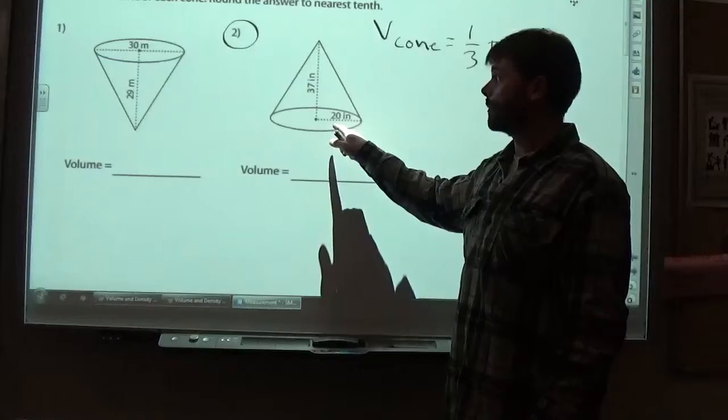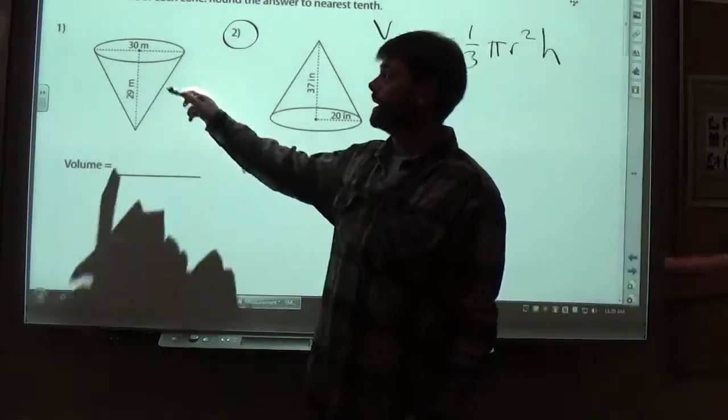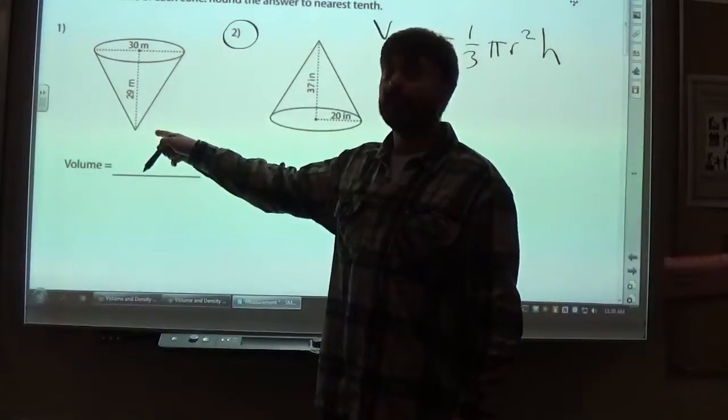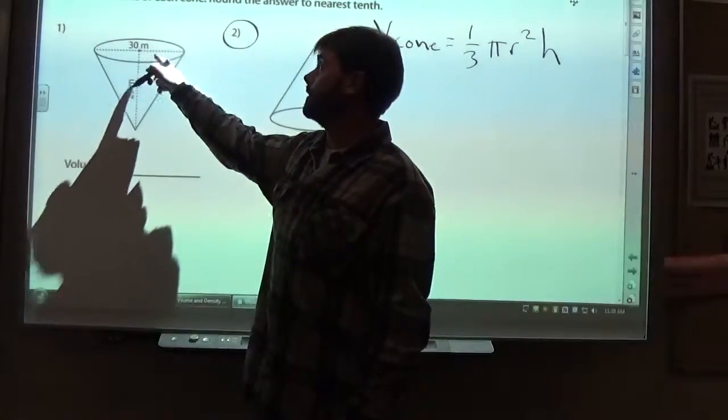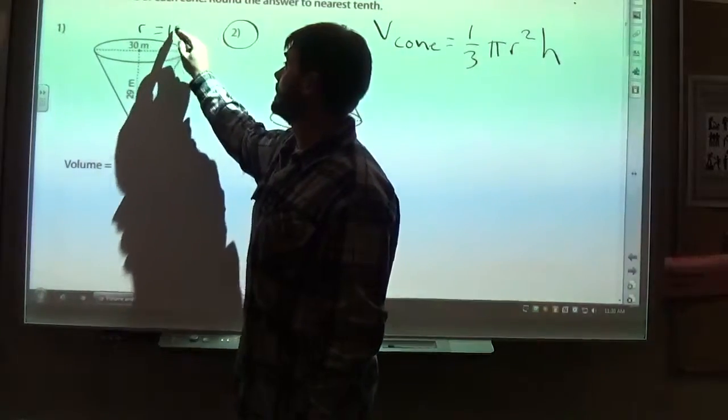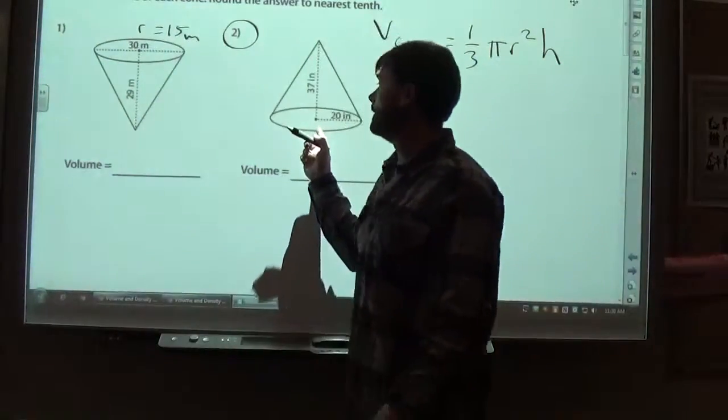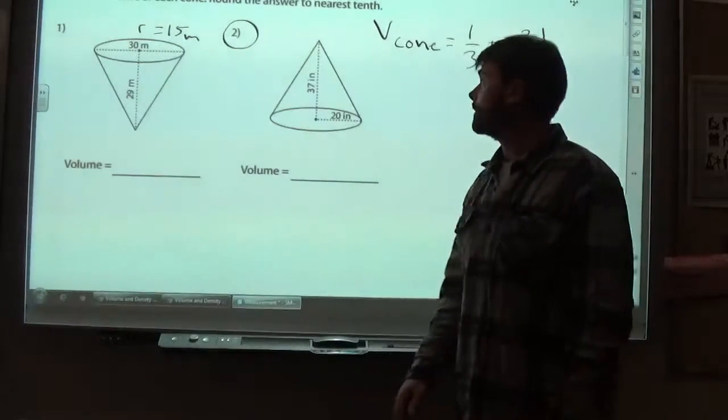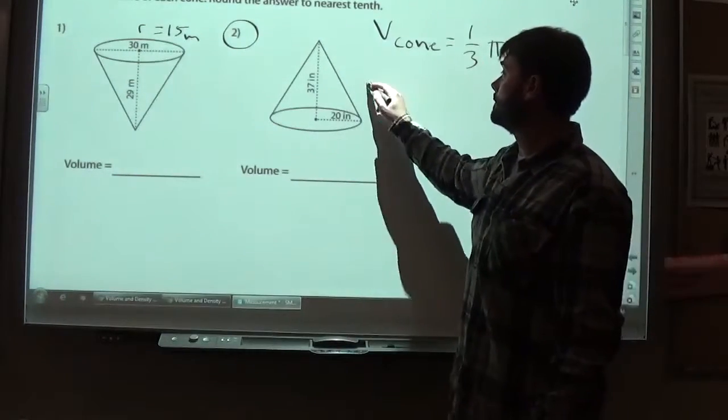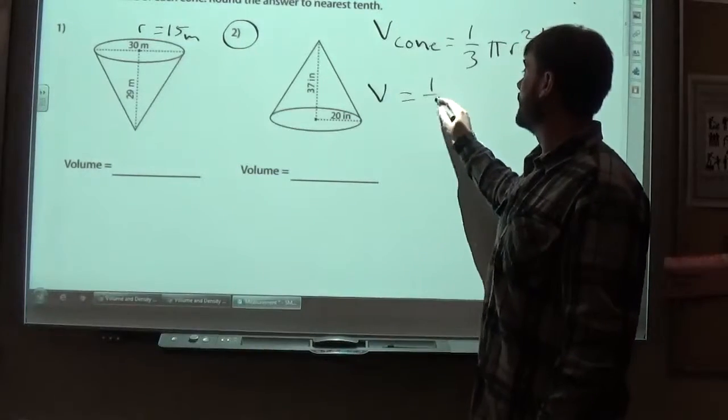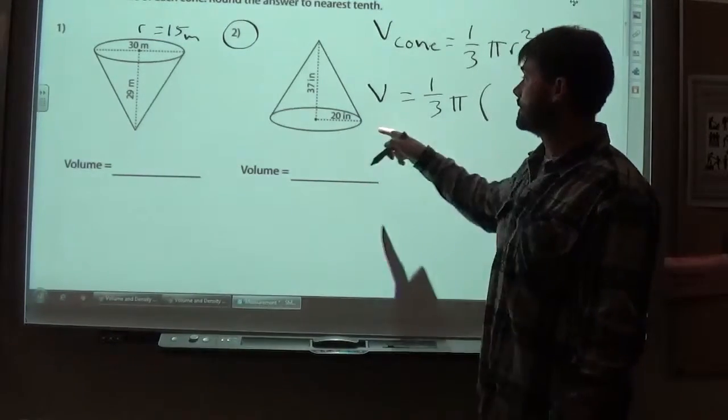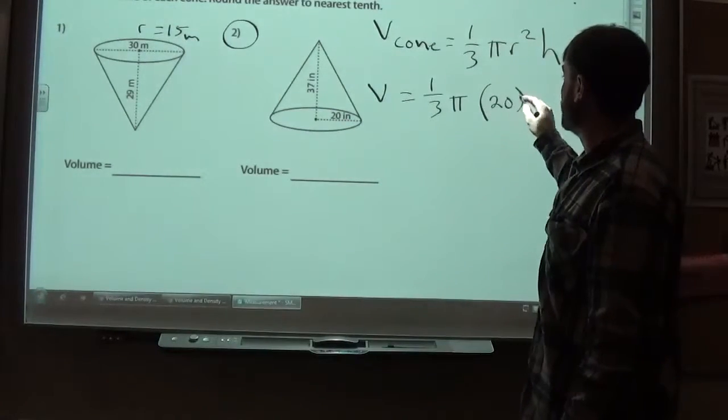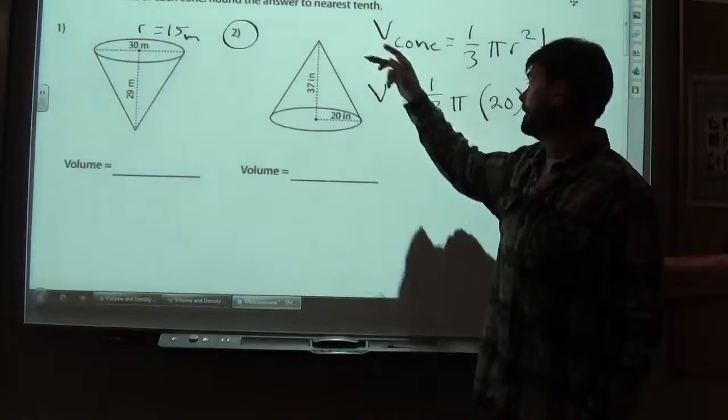Look at what you got for a radius, and look at what you got for a height. Sometimes they give you a diameter instead of a radius. So for example, if we were solving problem number one, this shows 30 meters all the way across. Well the radius here is actually equal to 15. Down here they actually give us a radius and it's equal to 20, and they give us a height that's equal to 37. So I can plug those into my equation here. I got one-third times pi times r squared, so the radius here is 20 squared, and then multiplied by the height here which is 37.